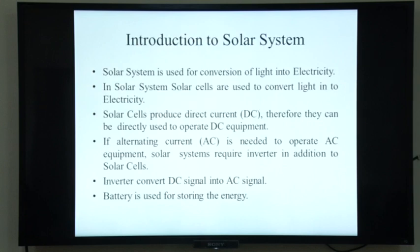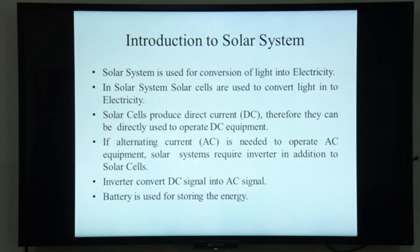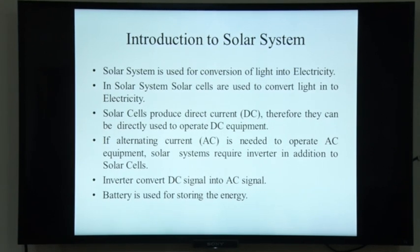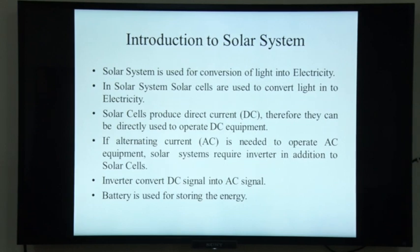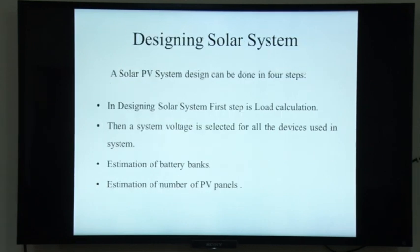Basically, a solar system is used for the conversion of light into electricity. Solar cells are used to convert light into electricity and produce direct current, so they can directly operate DC equipment like batteries and LED bulbs. If alternating current is needed to operate AC equipment like refrigerators and fans, the solar system will require an inverter in addition to solar cells. The inverter converts the DC signal into an AC signal, and a battery is used for storing energy.